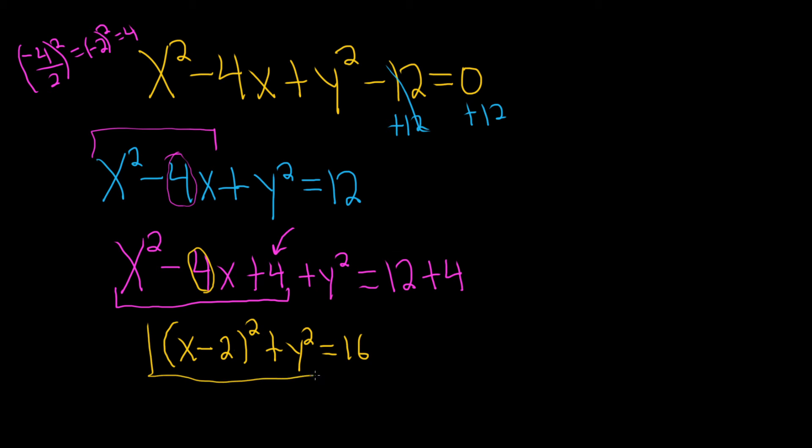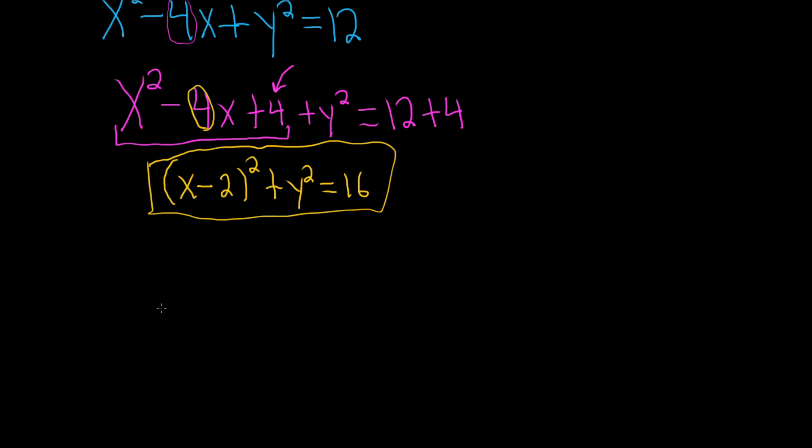So this is called the standard form of a circle. The general formula for a circle looks like this: x minus h squared plus y minus k squared equals r squared. That's the standard form, the center radius form of a circle, some people call it.